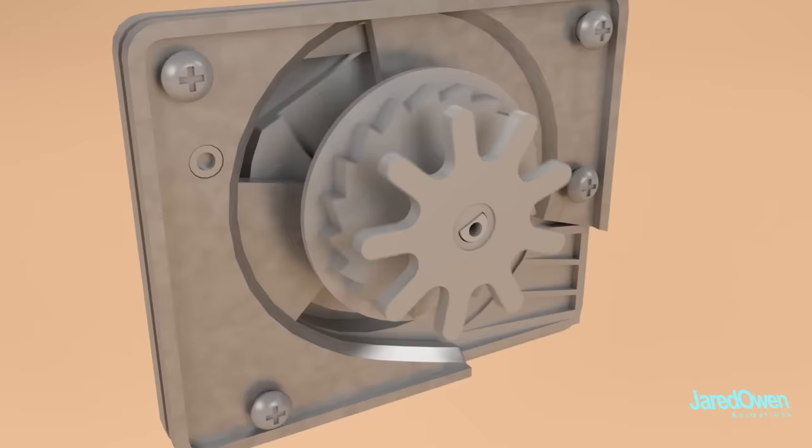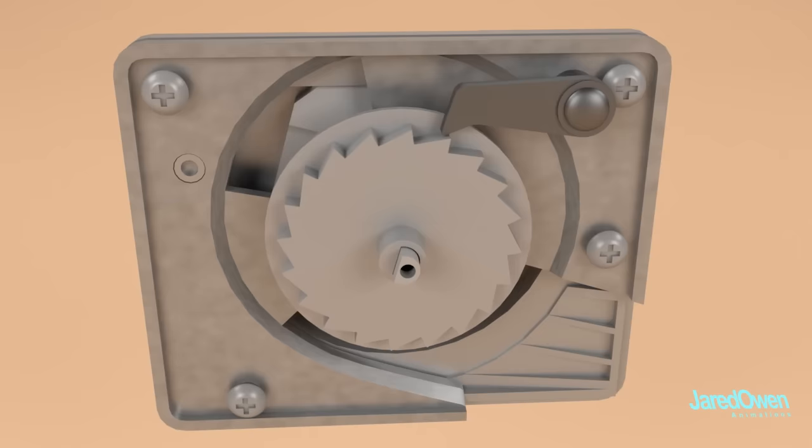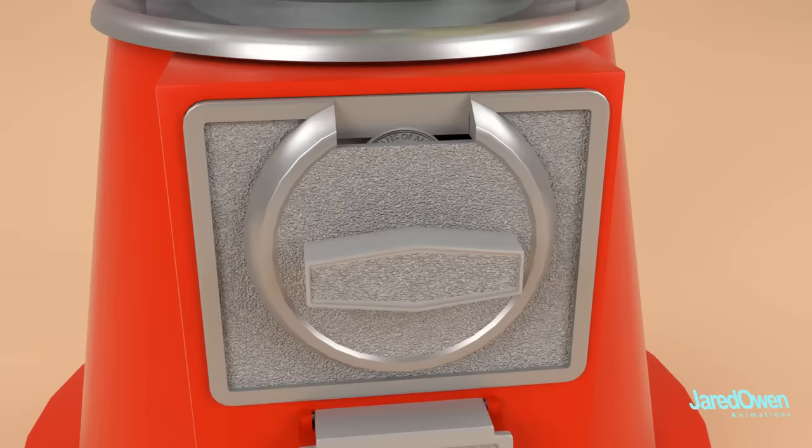This gear is called the ratchet gear. It only allows rotation in one direction. This piece is called the pawl. As it rotates, the pawl slides over the teeth on the gear. If you try and rotate the other way, no can do. The ratchet gear is also the reason why you hear clicking noises when you turn the handle.